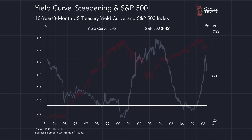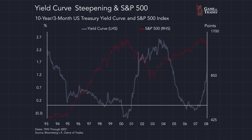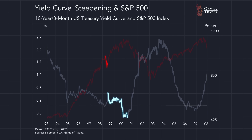Rewind to 1998 and we also saw the yield curve very briefly invert in July of 1998. That was followed by the yield curve steepening and un-inverting, which also coincided with a panic in the stock market where the S&P 500 dropped by 20% during that period. Then the yield curve re-inverted as the recession was postponed and that allowed the stock market to surge back to all-time highs.